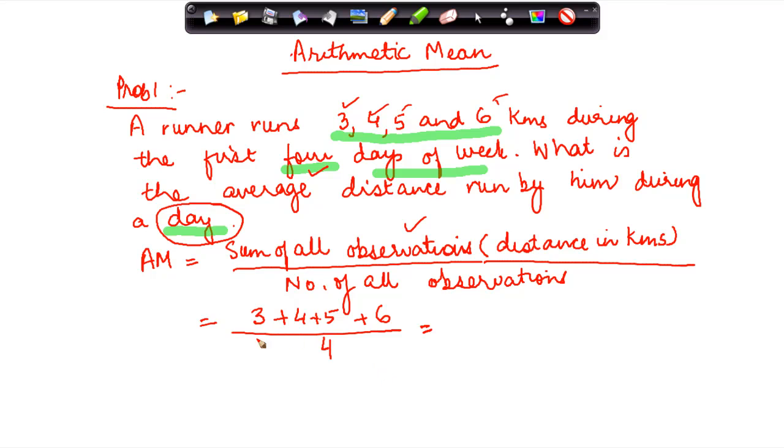Now what do I do? I do a sum of all these 3 plus 4 gives me 7 plus 5, 12 and 6 gives me 18 divided by 4. So 18 by 4 if divided both the denominator and numerator are divided by 2. So 2 divided by 18 will give me 9 and 4 divided by 2 will give me 2. So 9 divided by 2 which can also be written as 4, 1 by 2.